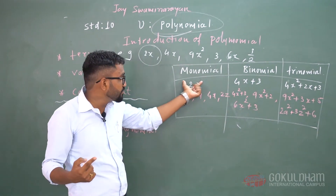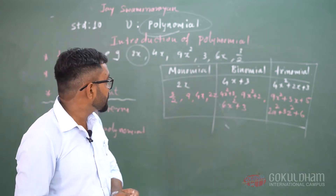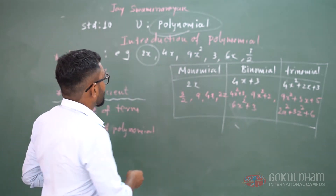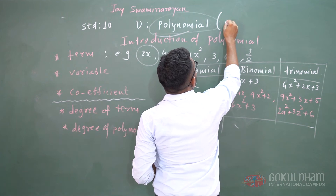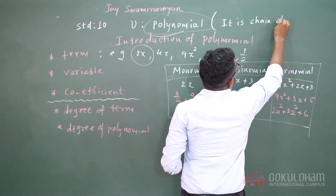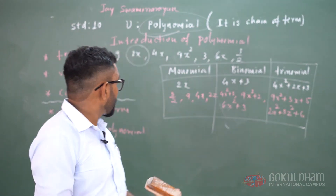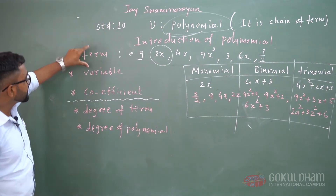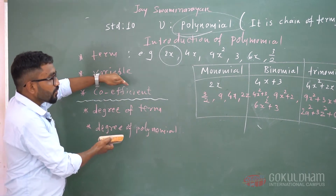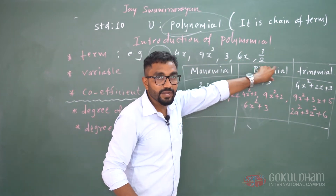Mono means one term, binomial means two terms, and trinomial means three terms. More than three terms is called polynomials. Polynomials means it is a chain of terms — more than one, two or three. We discussed term, variable and coefficient, and from that we have three types: monomial, binomial, and trinomial.